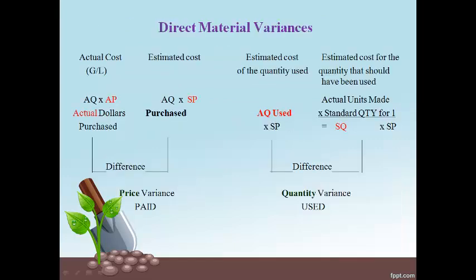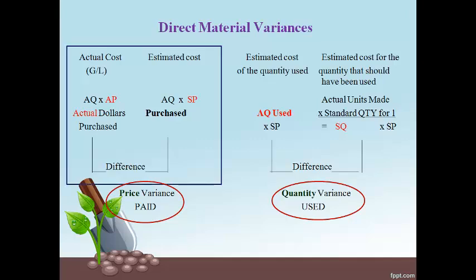Let's discuss direct material variances first. Variances are related either to the amount paid or to the quantity used. The left side analyzes the amount paid and the right side analyzes the quantity used. On the far left is the total cost of the actual materials purchased, computed by multiplying the actual quantity purchased by the actual price. The total amount is also stated in the general ledger.